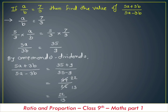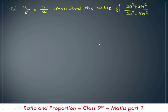So if a divided by b is equal to 7 by 3, then the value of the expression is 22 by 13. Now, if a divided by b is equal to 5 by 2, and from that we have to find the value of 2a squared plus 3b squared divided by 2a squared minus 3b squared.